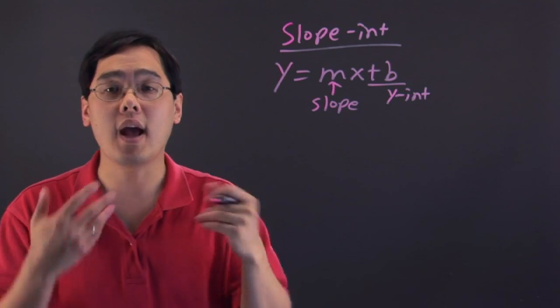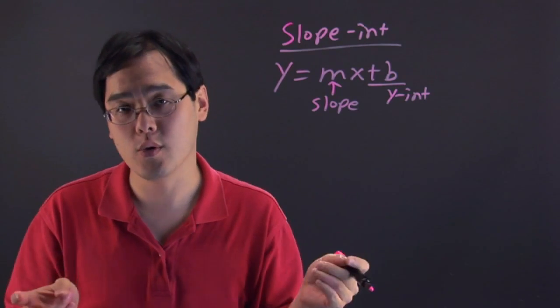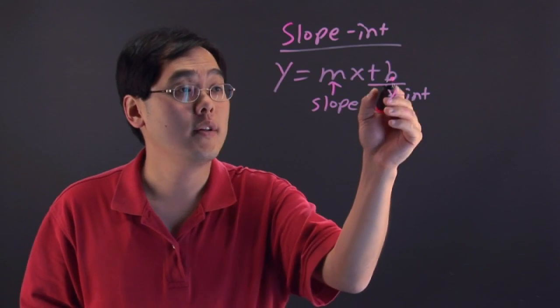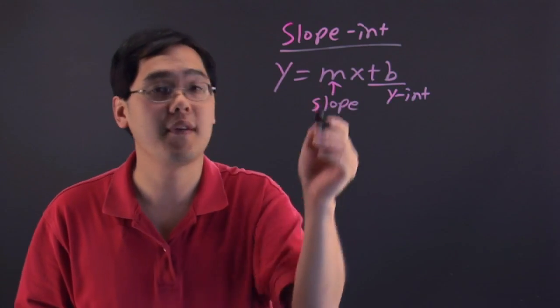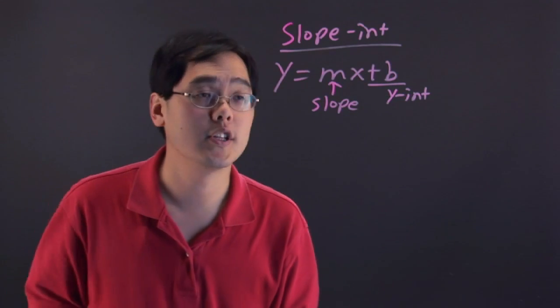When it comes to graphing a line, I always recommend that you graph in alphabetical order. What do I mean by that? I recommend that you graph the b, whatever number the b is, and then you graph the m. b comes before m. Here's an illustration.